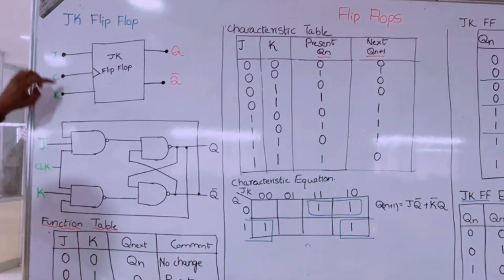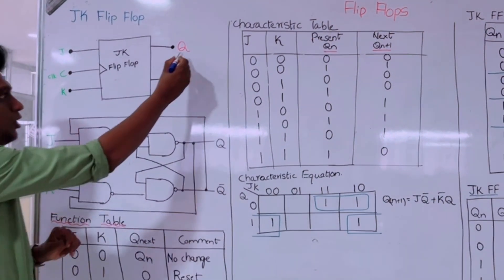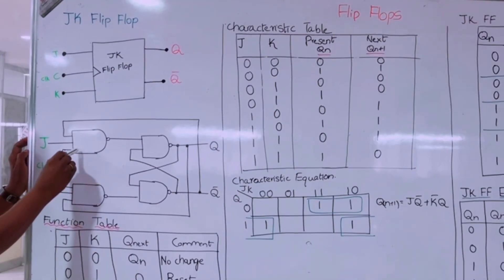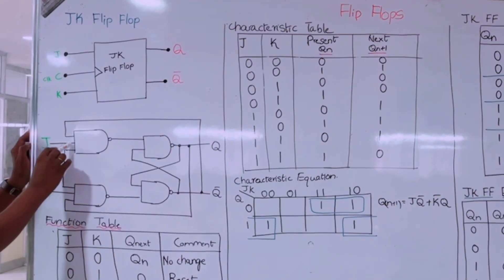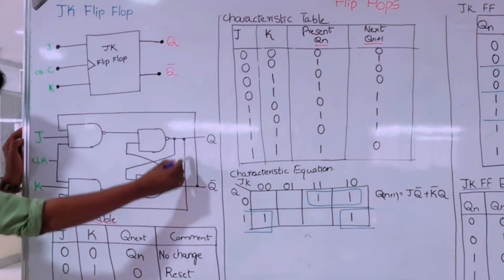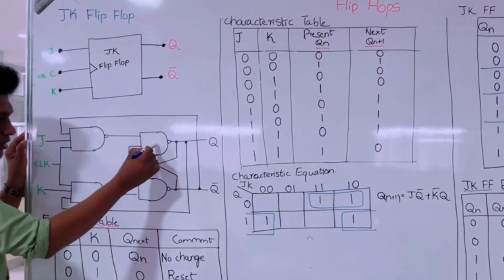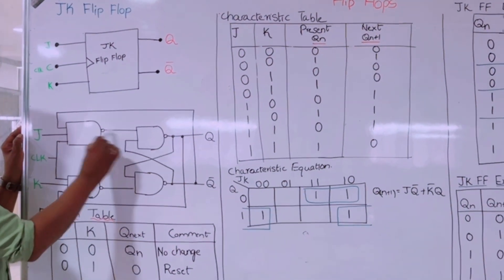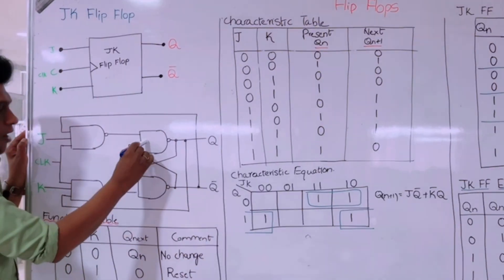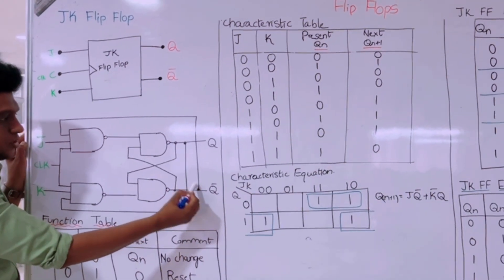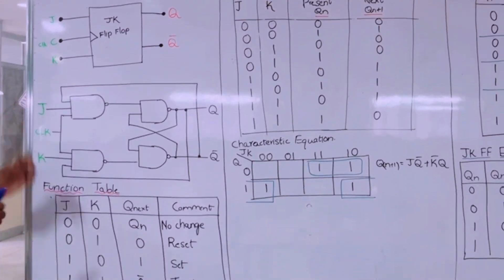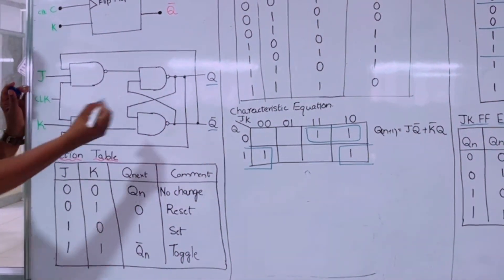This is the block diagram of the JK flip-flop. J and K are the inputs, and with the clock signal we get outputs Q and Q-bar. For the NAND gate implementation, we use three-input NAND gates. The clock input is common to both gates, J feeds one gate, and K feeds the other. Q-bar is fed back as an input to the J-side NAND gate, and Q is fed back to the K-side NAND gate. The outputs from those feed into two more NAND gates, giving Q and Q-bar.